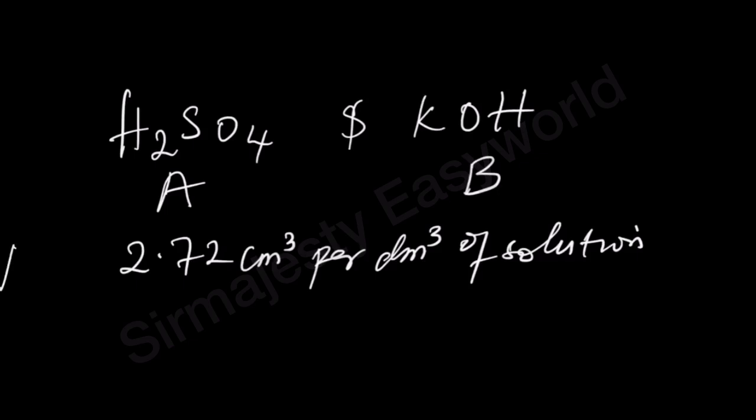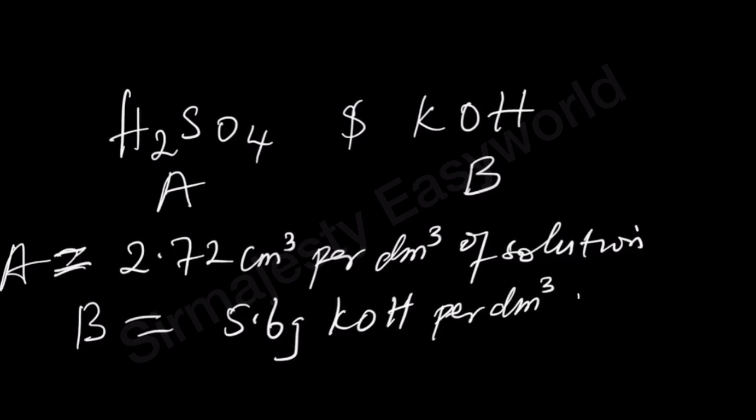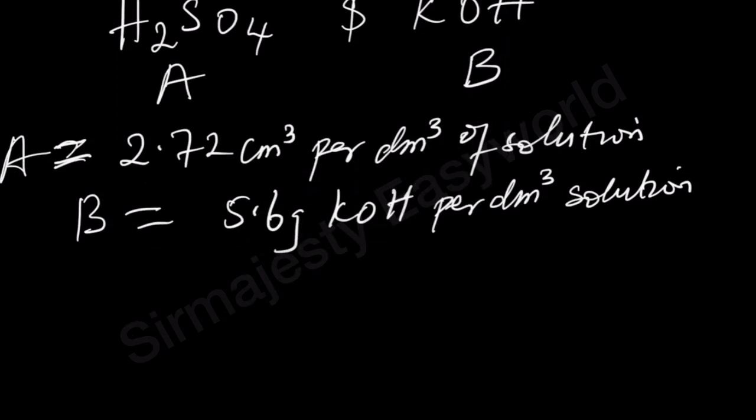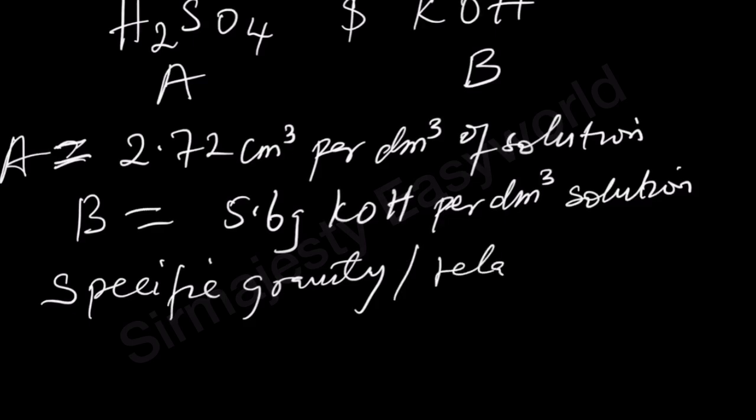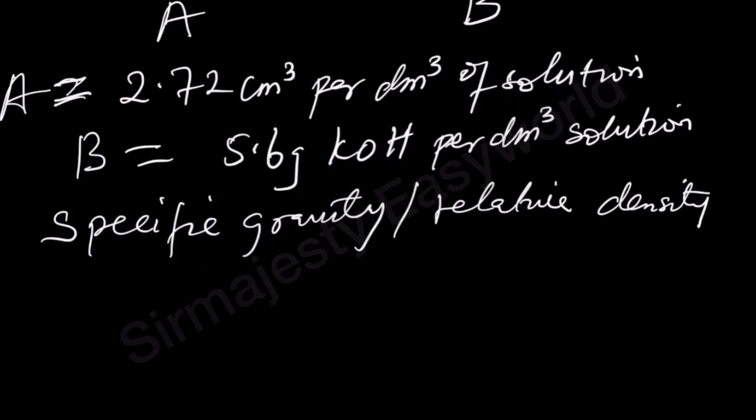A is instructed from specification to contain 2.72 cm³ per dm³ of solution. That's the specification for A. While B is specified to contain 5.6 grams potassium hydroxide per dm³ of solution. So what are the respective molarities? Besides, we have to know that the specific gravity or what we call the relative density.